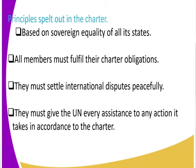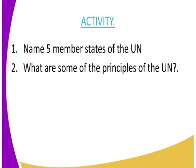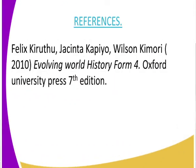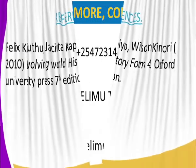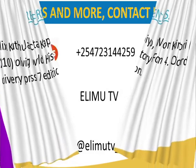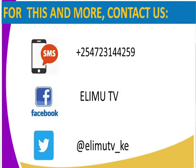We have now looked at who the members are, where the offices are, and the principles of the charter. For your assignment: name five member states of the UN, and state some of the principles of the United Nations. For reference, use 'Evolving World History and Government,' Oxford University Press, seventh edition. This is Alimit TV — get in touch via our Facebook page, Twitter account, SMS line, or YouTube channel where we post lessons. Keep watching and learning!